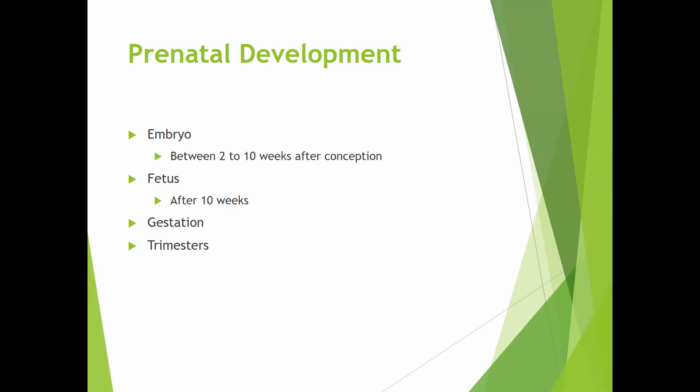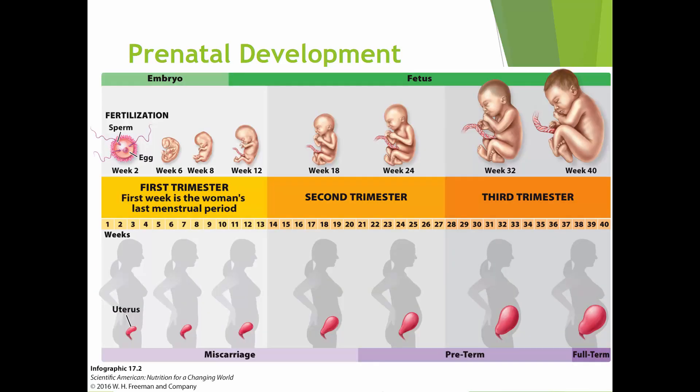Some quick terms: an embryo is considered two to ten weeks after conception; after ten weeks it's called a fetus. Gestation time refers to how long from when a woman is pregnant until she gives birth — it's different for different animals. In humans we break that time down into three trimesters, and anything after 37 weeks is considered full term.